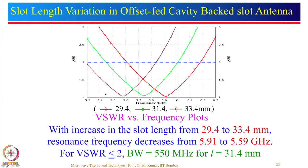Results are shown for three slot lengths: 29.4, 31.4, and 33.4 mm. As slot length increases, resonance frequency decreases from 5.91 to 5.59 GHz. For the designed length of 31.4 mm, the bandwidth corresponding to VSWR equal to 2 is 550 MHz, which is approximately 9 percent bandwidth at around 5.8 GHz.